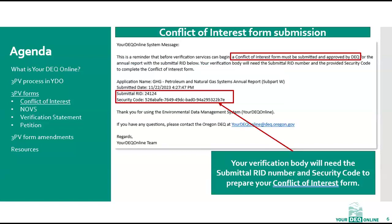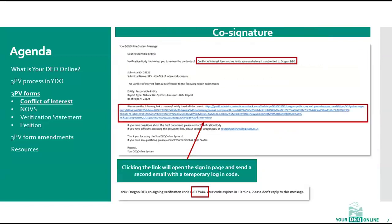Let's move on to form submissions. We'll first cover submission of the Conflict of Interest form, or COI. It is your responsibility to ensure verification is completed for any report you submit that meets the verification thresholds. When DEQ reviews your annual report submission, it will also do a third-party verification applicability check. If verification is applicable, you will receive an email notification from the system stating that a Conflict of Interest form is required. This notification will contain a submittal RID number and a security code your verification body will need when completing your Conflict of Interest form. Once your COI form has been drafted by your verification body, you will receive a system notification to prompt you for a co-signature. Clicking the provided link in this email will direct you to a login page and generate a second email with a six-digit login code.